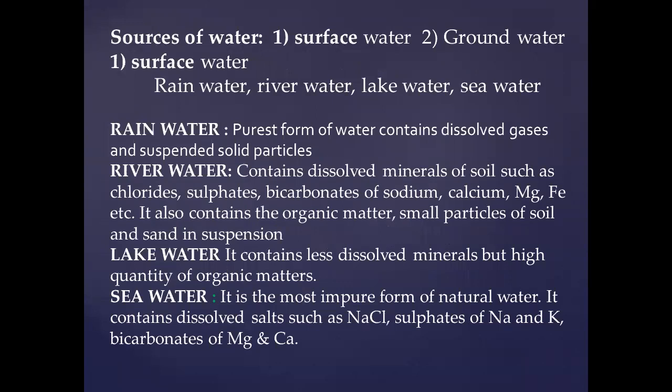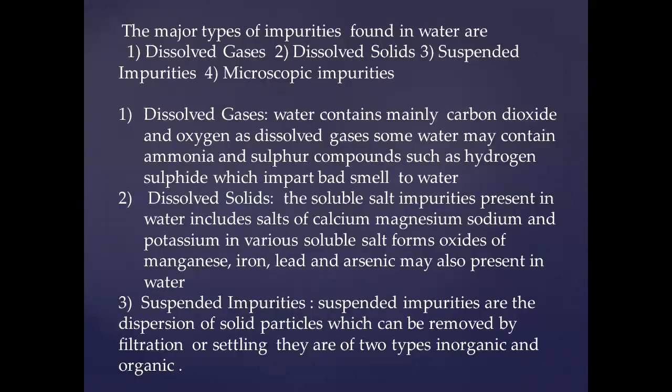There are generally four types of impurities in water: dissolved gas impurities, dissolved solid impurities, suspended impurities, and microscopic impurities. Regarding dissolved gases: water may contain dissolved oxygen and carbon dioxide. If excess carbon dioxide is present, it forms carbonic acid. If it contains excess sulfur dioxide or oxides of nitrogen, it may turn into sulfuric acid (H2SO4). Water can also dissolve ammonia and hydrogen sulfide — if hydrogen sulfide is dissolved, the water has a very bad odor and is not usable.